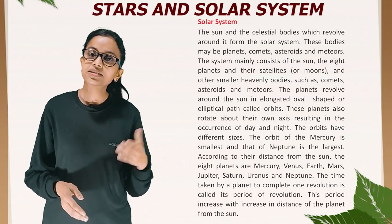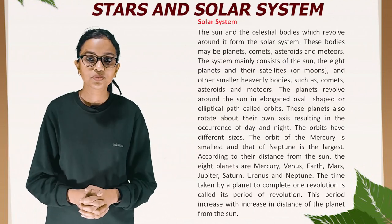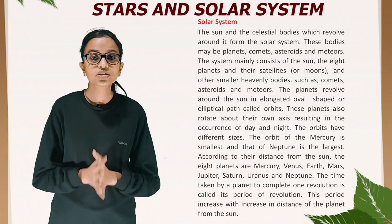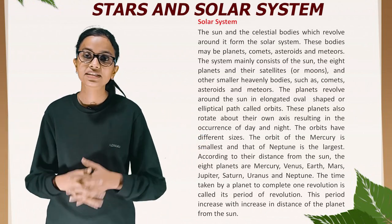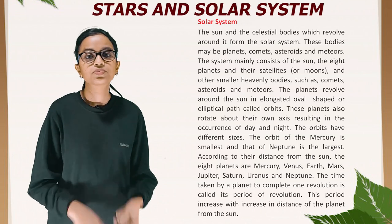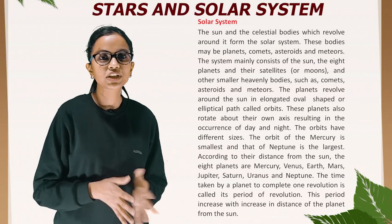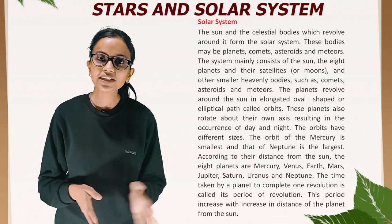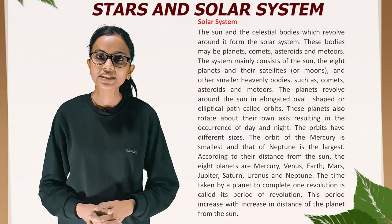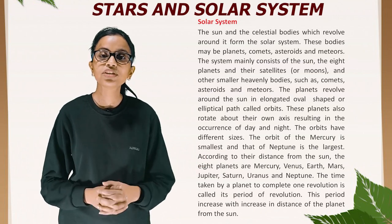The Sun and the celestial bodies which revolve around it form the solar system. These bodies may be planets, comets, asteroids and meteors. The system mainly consists of the Sun, the eight planets and their satellites or moons, and other smaller heavenly bodies. The planets revolve around the Sun in elongated, oval-shaped or elliptical paths called orbits. These planets also rotate about their own axis, resulting in the occurrence of day and night. The orbit of Mercury is smallest and that of Neptune is the largest.